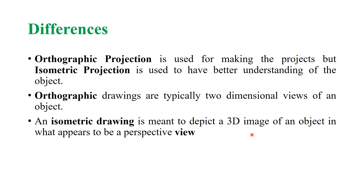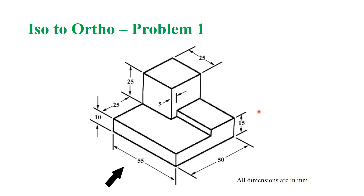Now let us look at Problem 1. We will be converting an isometric view into an orthographic view. This exercise provides an isometric view of a particular object with all dimensions in mm. The direction in which the arrow points should be taken as the front view. Based on the front view, the top and side views will be drawn.